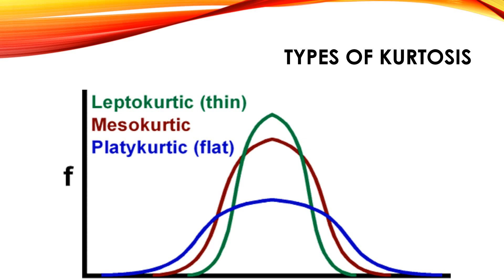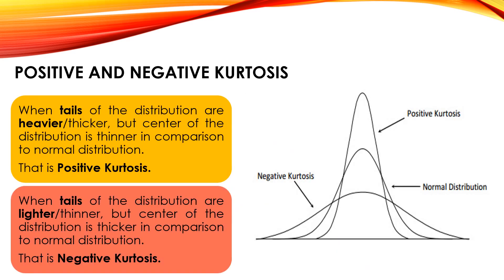Types of kurtosis: first is leptokurtic — if data is closely packed in comparison to normal distribution, there will be peakness and the curve becomes thin at the center. That is a leptokurtic curve. Next is mesokurtic — same as normal distribution. Third is platykurtic — when data is spread throughout the distribution, the curve becomes flat. You can remember it through the name: 'plate' is flat, so platykurtic. Moving to positive and negative kurtosis: when tails are heavier but center is thinner than normal distribution, that is positive kurtosis, as in leptokurtic.